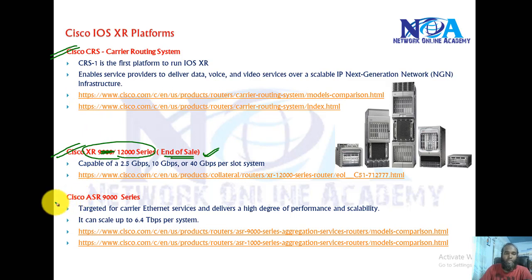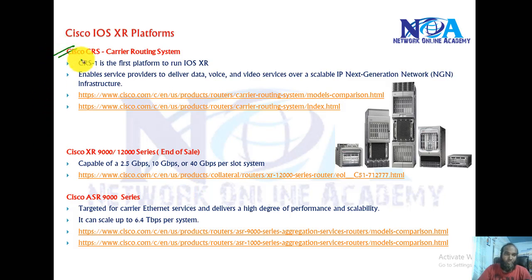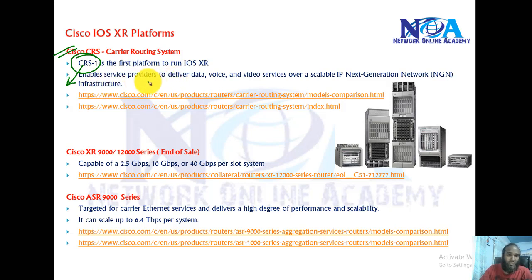The next platform is the Cisco ASR 9000 series routers, which will be covered in most of the service provider tracks. Starting with the Cisco CRS, the CRS-1 was the first platform which used the Cisco IOS XR image. It is a router designed for next-generation internet inside the service provider network to deliver high-speed data, voice, and video services, specifically for internet connections.